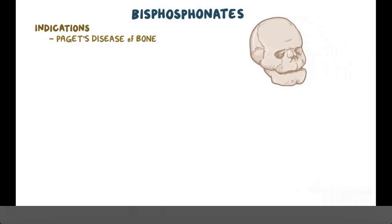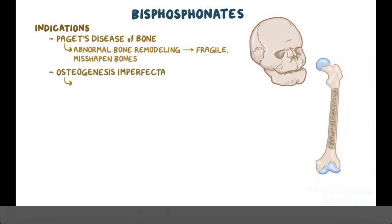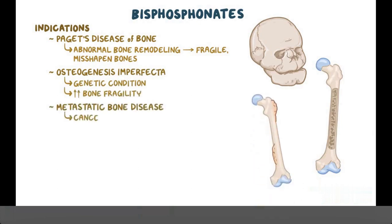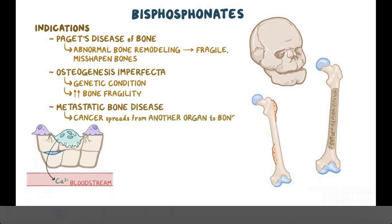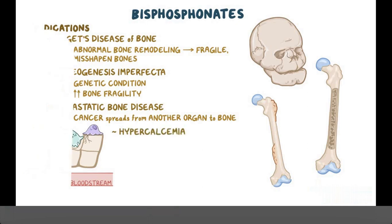Besides osteoporosis, other indications for bisphosphonates include Paget's disease of bone, which is a condition characterized by abnormal bone remodeling that results in fragile misshapen bones; osteogenesis imperfecta, which is a genetic condition characterized by increased bone fragility; and metastatic bone disease, which occurs when cancer spreads from another organ to bone. Since osteoclasts can break down bones to release calcium into the blood, their inhibition will decrease blood calcium levels, making it effective in the treatment of hypercalcemia.